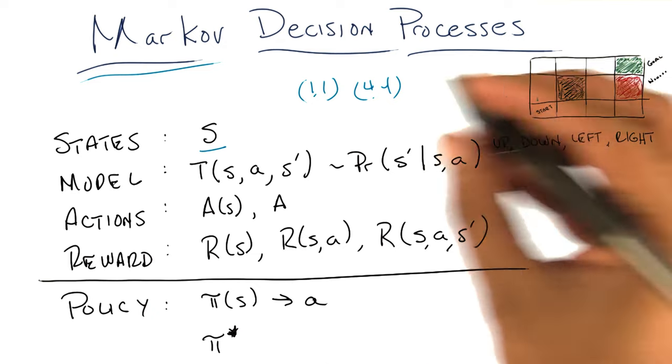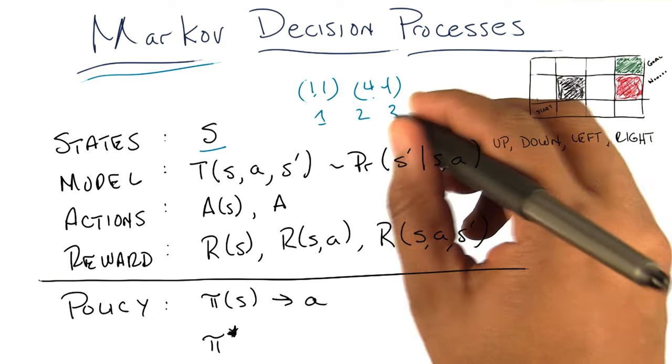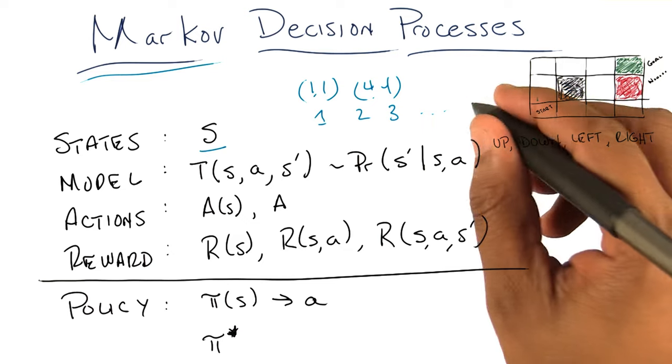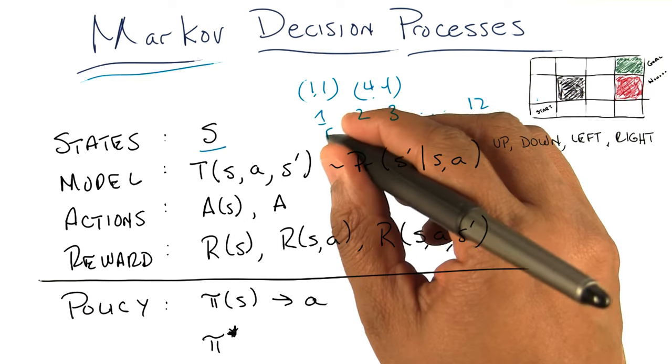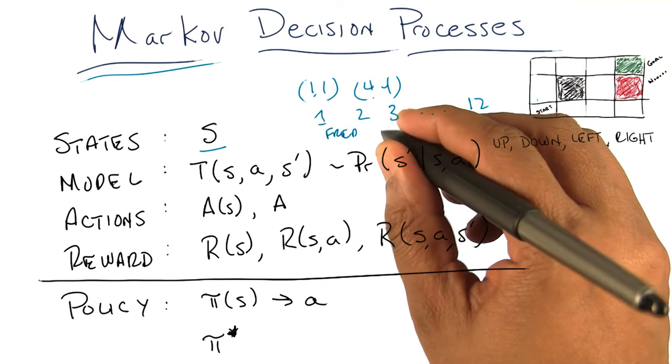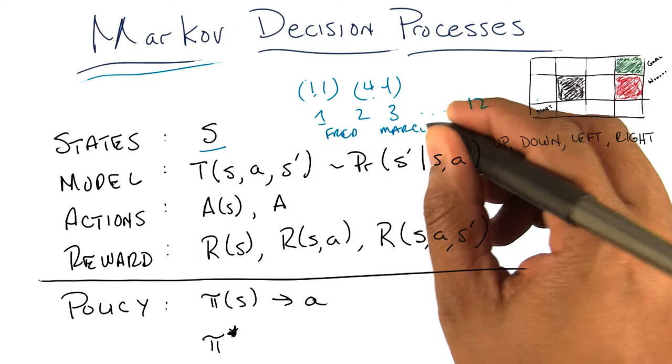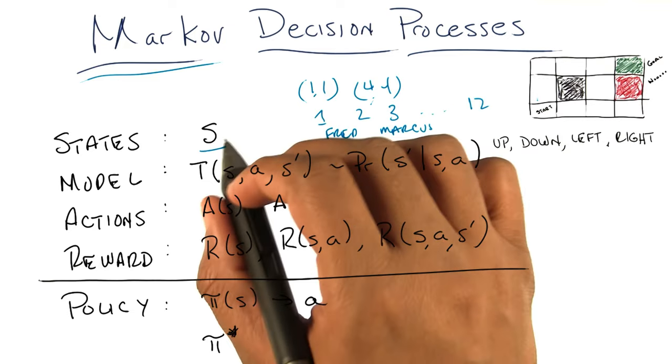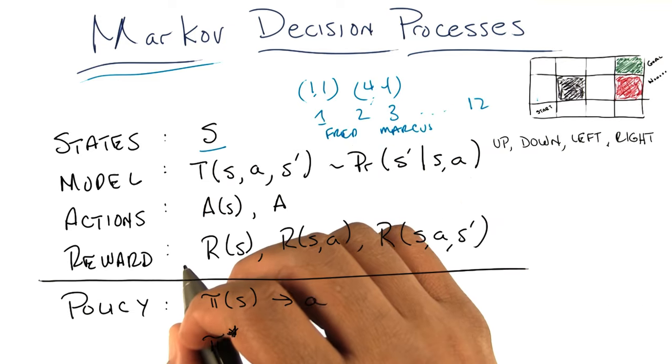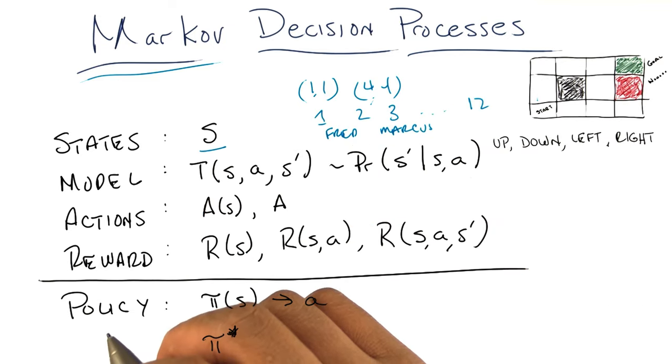Or frankly, it doesn't matter. We could call these states one, two, three, up to 12, or we could name them Fred and Marcus. It doesn't really matter. The point is that they're states, they represent something, and we have some way of knowing which state we happen to be in.